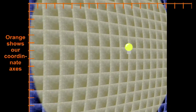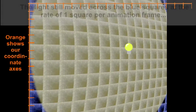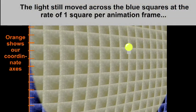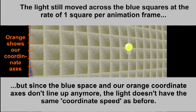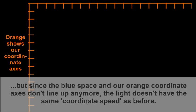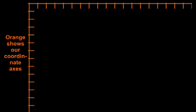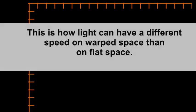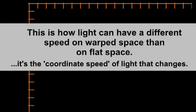You may have noticed that the light still moved across the blue squares at the rate of one square per animation frame. But these blue squares are representing a warped space and they don't line up with our orange coordinate axis anymore. So if we're using the unwarped orange coordinate axis to measure the speed of the light, we notice that it doesn't have the same speed that it did before. The coordinate speed of light has changed. And this is how light can have a different speed on warped space than on flat space.